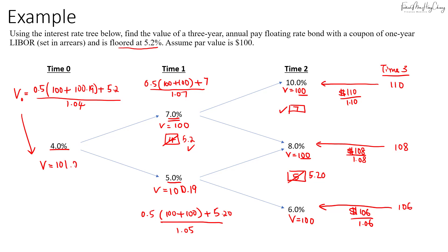We can see that the value here will be higher than the value of a straight floater. If we compare that to the value of a straight floater, the value will just be the notional, which is $100. So the value of the floor is the difference, which is 101.245 minus 100, so that's $1.245.